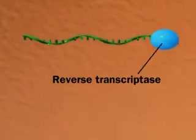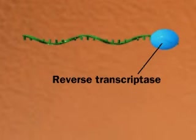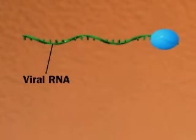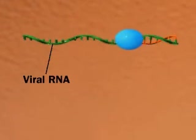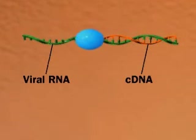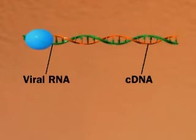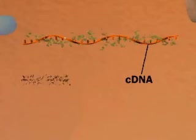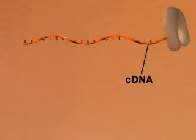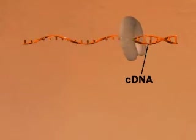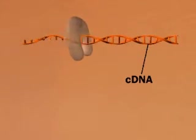Using reverse transcriptase brought in by the virus, the viral RNA makes a complementary cDNA. The viral RNA degrades, and the cDNA is the template for a second DNA strand.